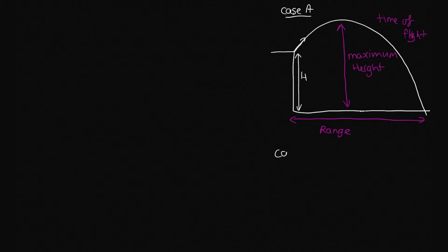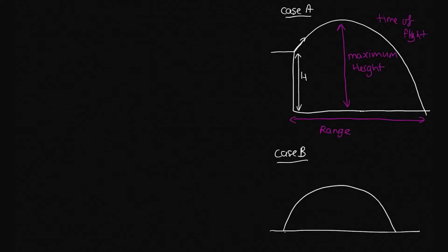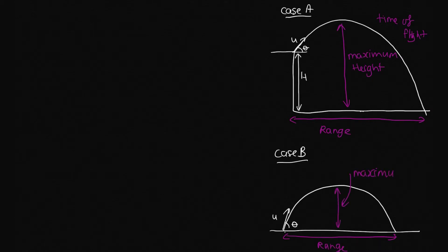Case B is more like the ball that we were throwing before. We'll imagine throwing a ball up off the ground, and it comes back down to the ground like this. We've got some initial velocity which we'll call U, at some initial angle theta with the horizontal. For Case B we've got a range, a maximum height, and we'll also look at the time of flight. These two cases are very similar — Case B is really just a special case of A with H equal to zero.